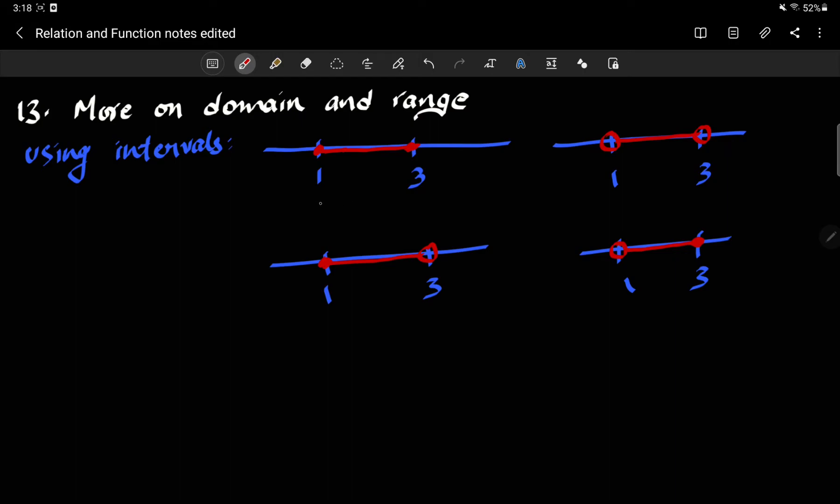These in interval notation, you use square bracket for when the number is included, round for when it is not included. So 1, 3, 1, 3. So we use this bracket for endpoint included and we use this bracket for endpoint not included.